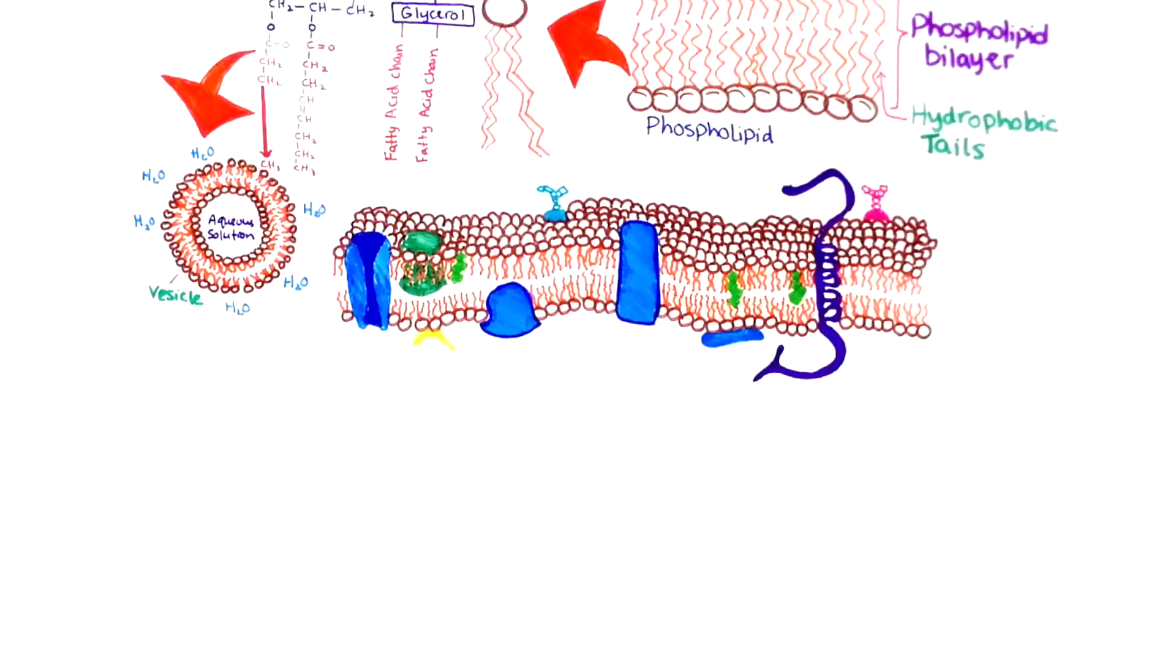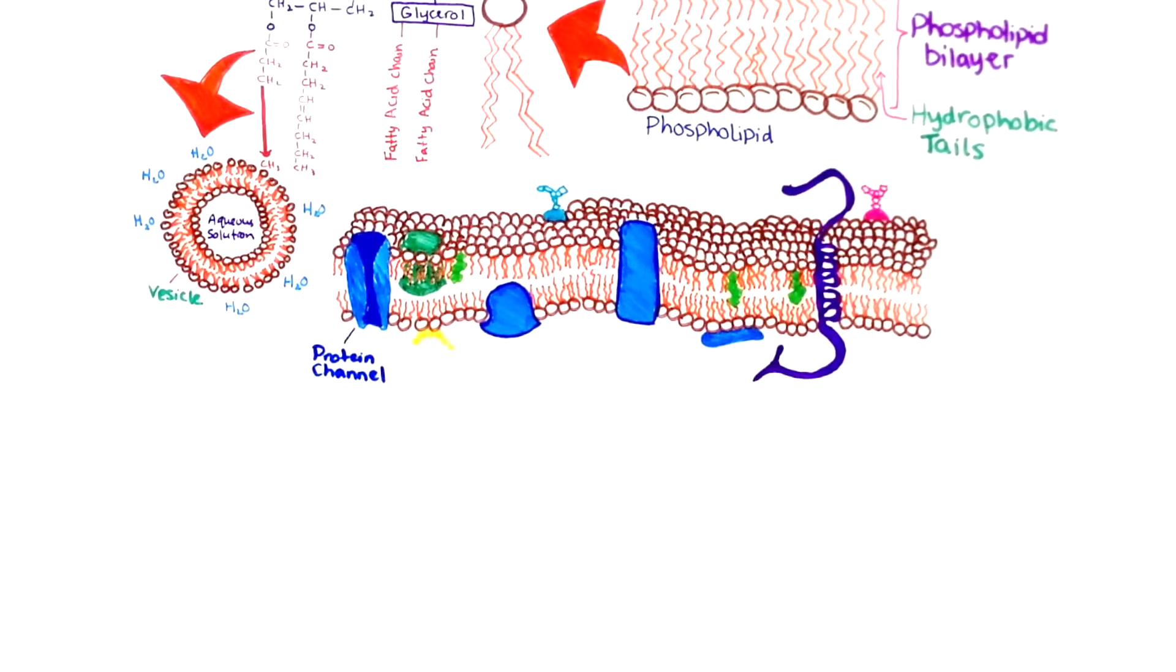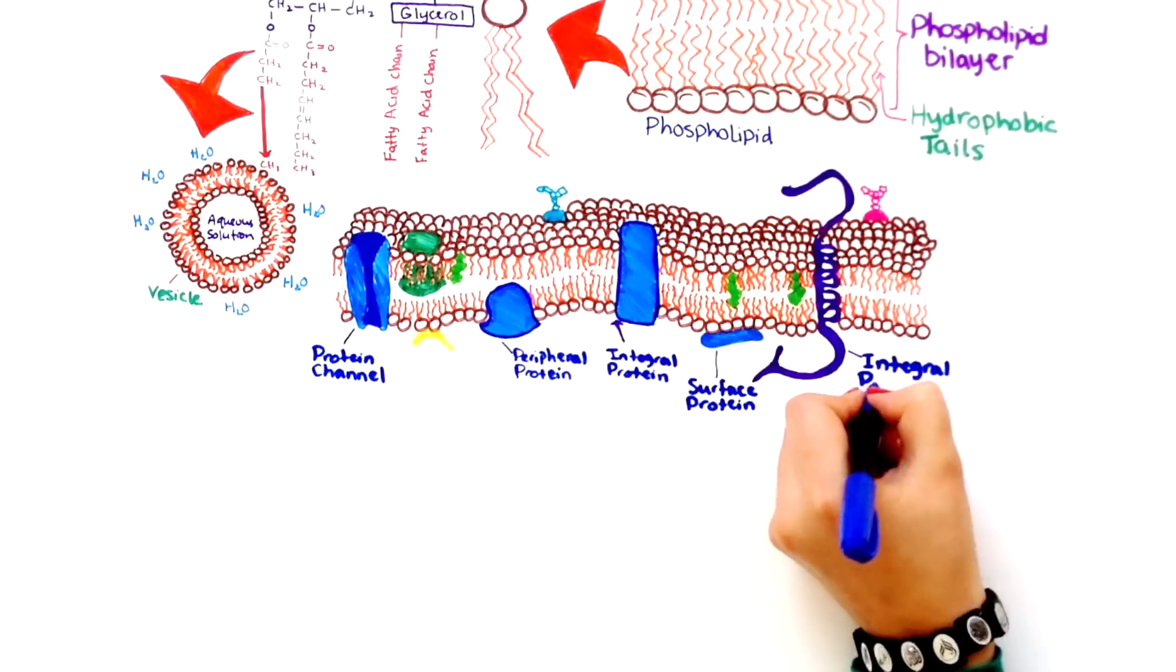There are two main types of membrane proteins, those that traverse the membrane called integral proteins, such as protein channels, and those that are stuck on the inside or outside of the membrane called peripheral proteins. Integral proteins are often involved in the transport of materials, while surface proteins generally function in cellular communication.